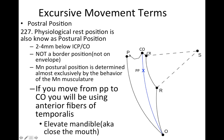Postural position — if you look in the envelope, we've got the outside of the envelope, and on the inside we've got the postural position. We have CO and we drop down to postural position. The physiologic rest position is also known as the postural position. It's going to be two to four millimeters below intercuspal position or centric occlusion. This is not a border position — you can tell that because it's not on the envelope; in order to be a border position, it has to be on the outside. The mandibular postural position is determined almost exclusively by the behavior of the mandibular musculature — it's a muscle-guided position.